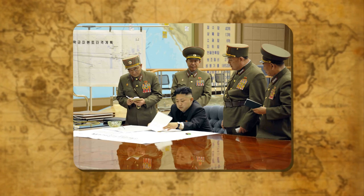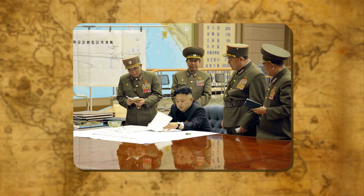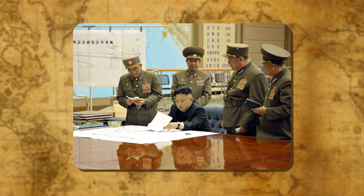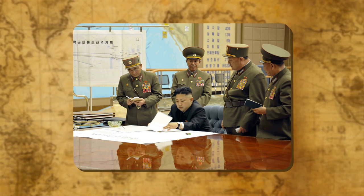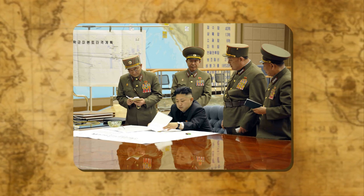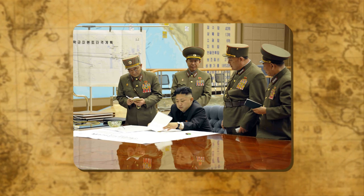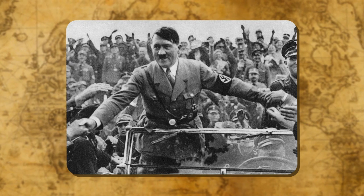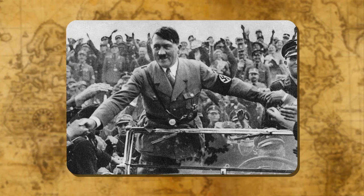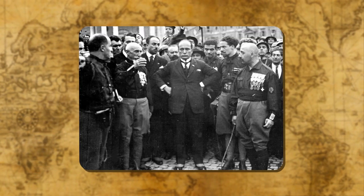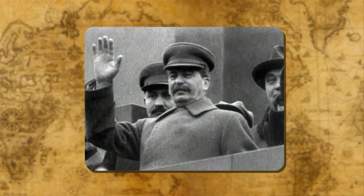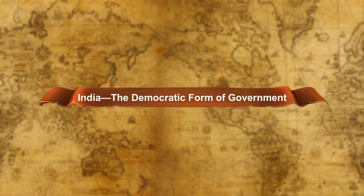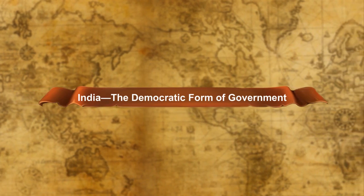A dictatorship is a government where people have no right to participate in ruling the nation. The whole power is vested in the hands of a single person. The powers of the dictator cannot be checked. In dictatorship, the people cannot elect or change their government. Hitler in Germany, Mussolini in Italy, and Stalin in Russia are examples of dictators in the world. India follows the democratic form of government.